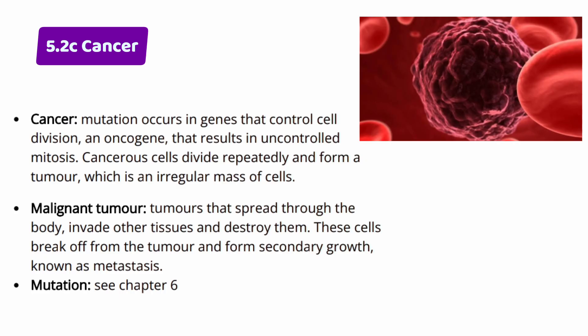Hi everyone, I hope you will be fine and welcome back to the last video of chapter 5, which is dedicated to cancer. We will learn about cancer — what is cancer? It is a mutation that occurs in genes that control cell division and oncogenes, resulting in uncontrolled mitosis.